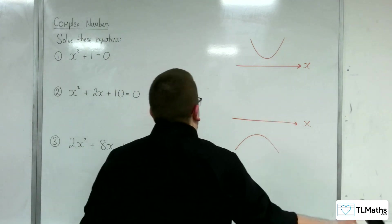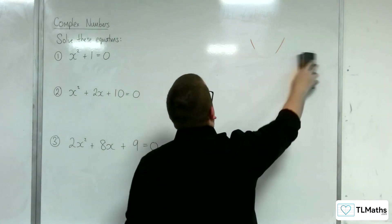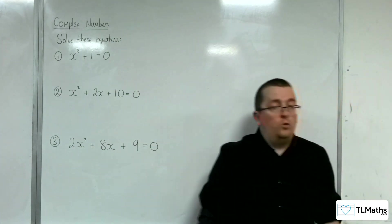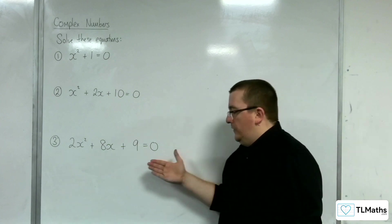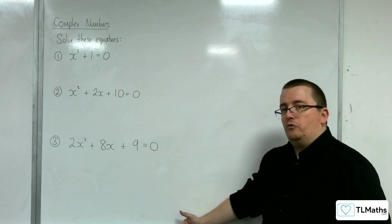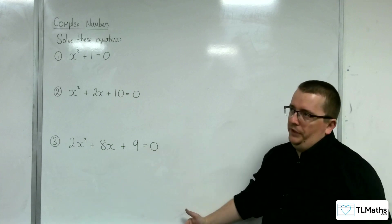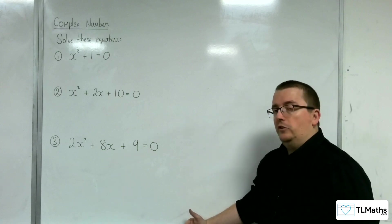We are going to look at these three examples. Now, if you were to type these into your Casio ClassWiz calculator using the quadratic solver, then it will give you the results straight out. It is important that you know where these results have come from.